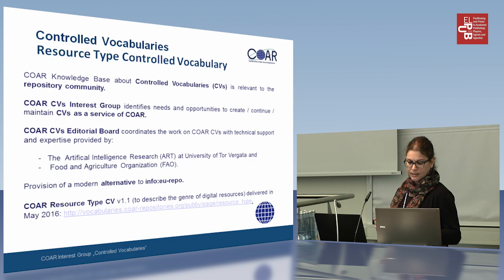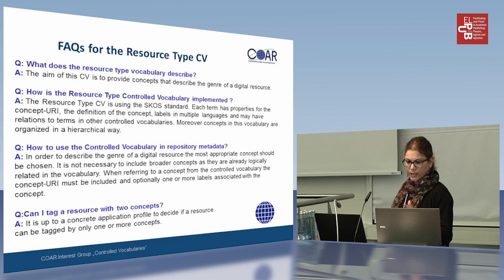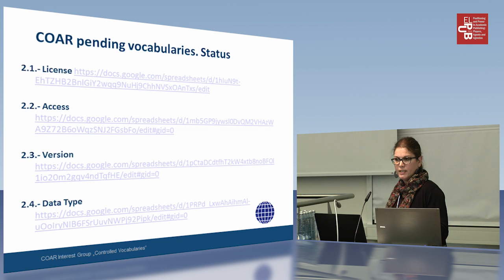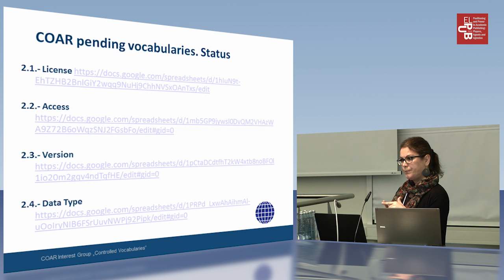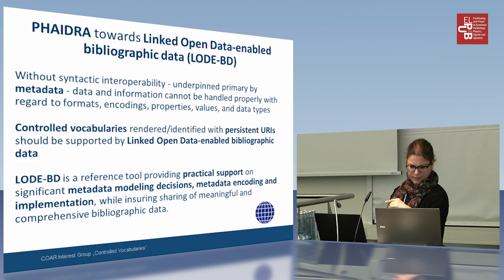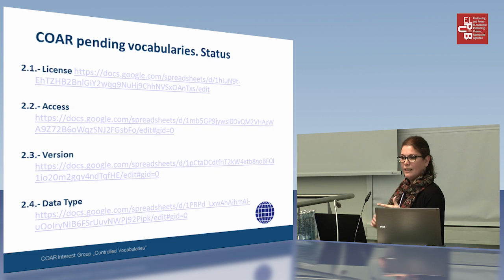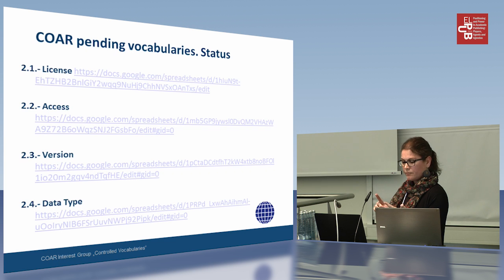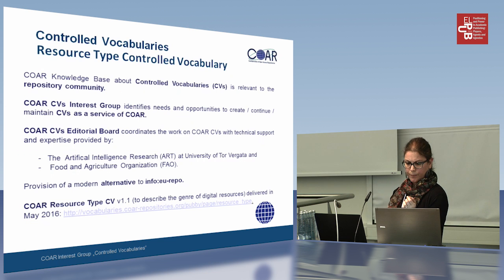At the moment we have five vocabularies: type of resources, license, access, and version type. Currently, the one that is available is the type of resources. We are using SKOS XL for modeling the vocabulary, and we are also translating the vocabularies into all the languages available in the working group — Japanese, Spanish, Catalan, Dutch, etc. They are published in RDF and available on our server at the University of Tor Vergata, hosted by the Food and Agriculture Organization.